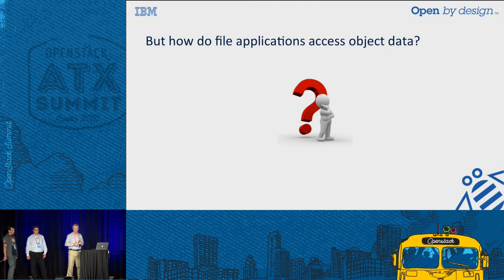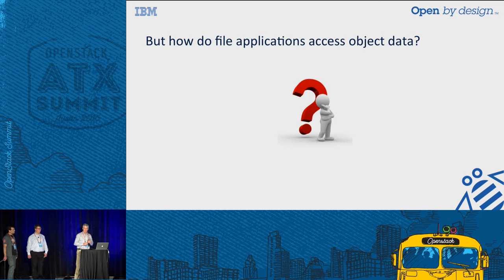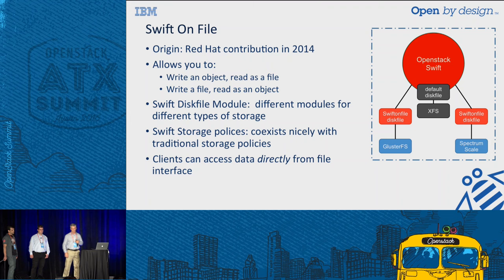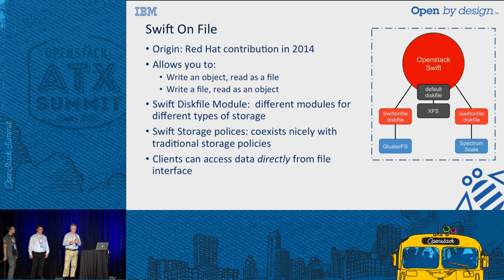That tells us how we're going to get data into object storage. But how do file applications access that data? That's where Swift on File fits in. Swift on File was a Red Hat contribution to OpenStack in 2014. It allows you to write data as an object and read it as a file, or vice versa — write it as a file and read it as an object.